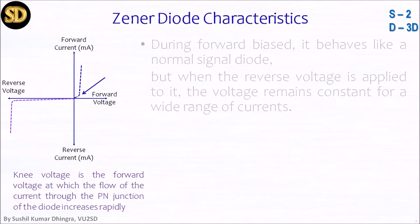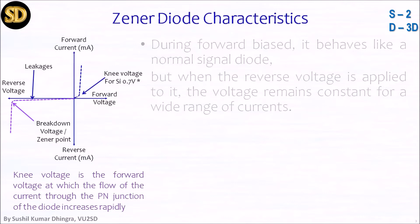When it comes to the reverse direction, because of minority carriers — holes and electrons — a small leakage current will flow. But a moment will come when the breakdown voltage, also called the Zener voltage, is reached. Then this diode suddenly allows full flow of current. Because it is a heavily doped semiconductor, it will not be damaged.